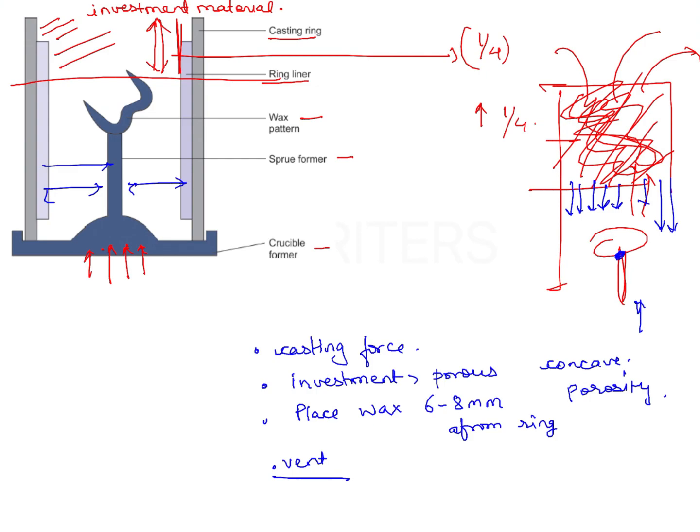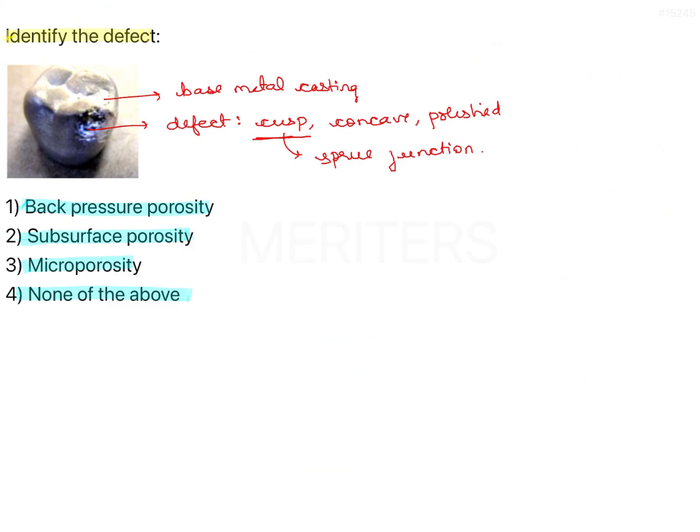Based on this understanding, this could be back pressure porosity. This could also be a localized shrinkage porosity, which also happens at the sprue wax pattern junction, but that is not in the option, so we will not talk about it right now.